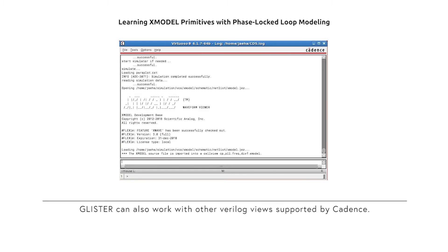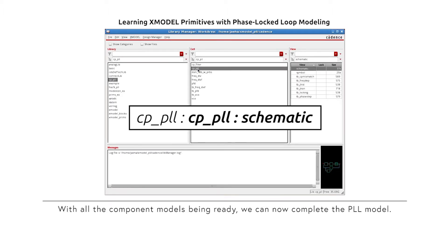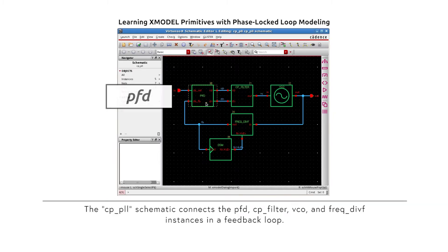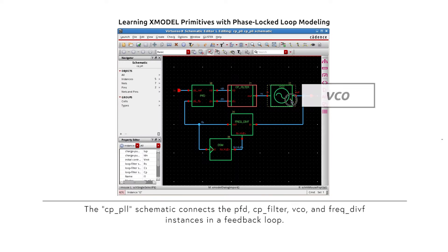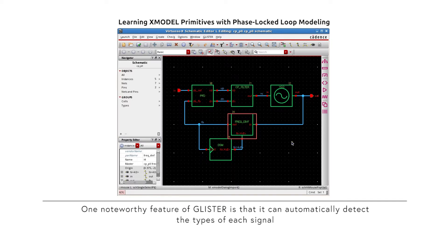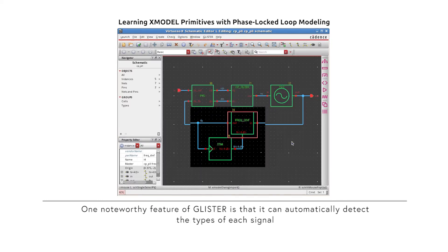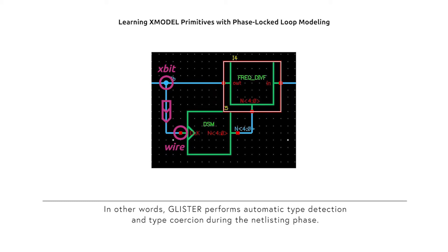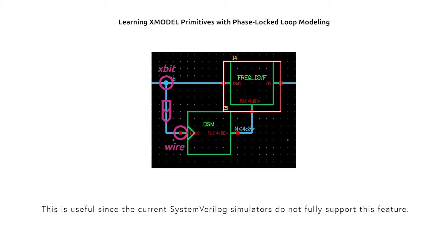Glister can also work with other Verilog views supported by Cadence. Now all the component models are ready, and we can complete the PLL model. The PLL schematic connects the PFD, CP Filter, VCO, and Frequency Divider instances in a feedback loop. One noteworthy feature of Glister is that it can automatically detect types of each signal and insert connectors when two different-type ports are being connected. In other words, Glister performs automatic type detection and type coercion during the netlisting phase. This is useful since SystemVerilog simulators do not fully support this feature yet.